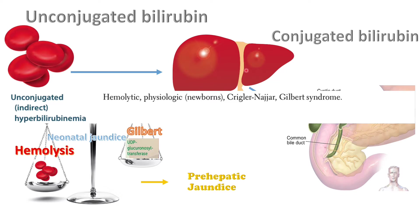Pre-hepatic jaundice always results in a rise in unconjugated bilirubin — also called indirect bilirubin — which is insoluble in water and fat soluble. That's why it's very dangerous: it can cross membranes, particularly the blood-brain barrier, and therefore can lead to kernicterus. So whatever is pre-hepatic is unconjugated and water insoluble.